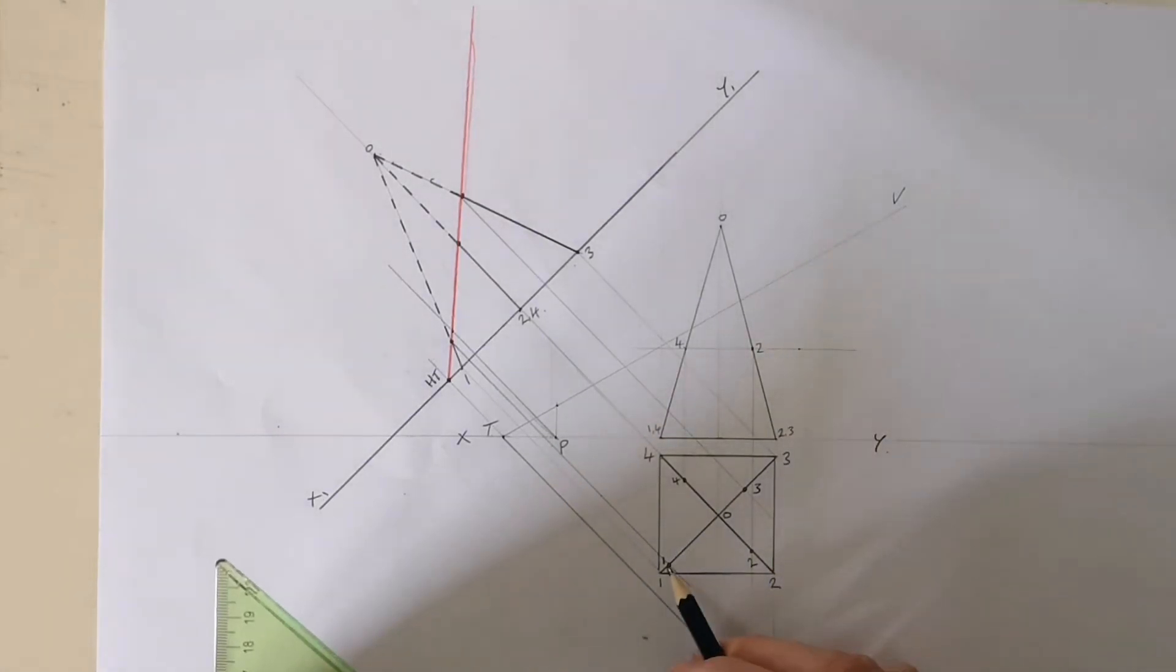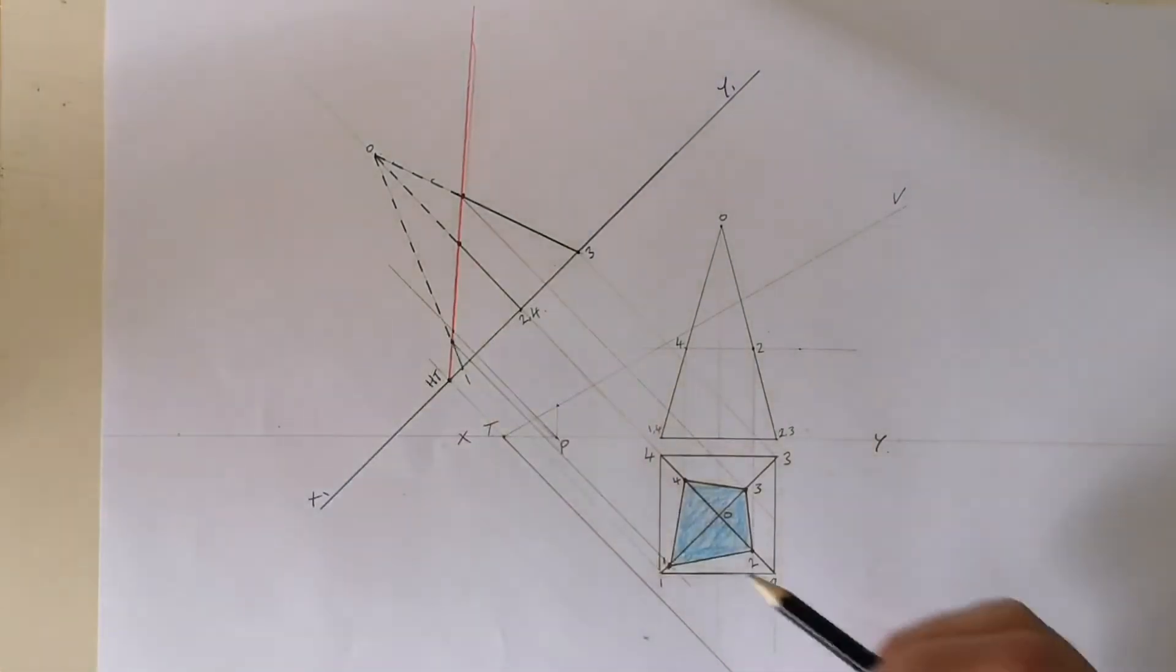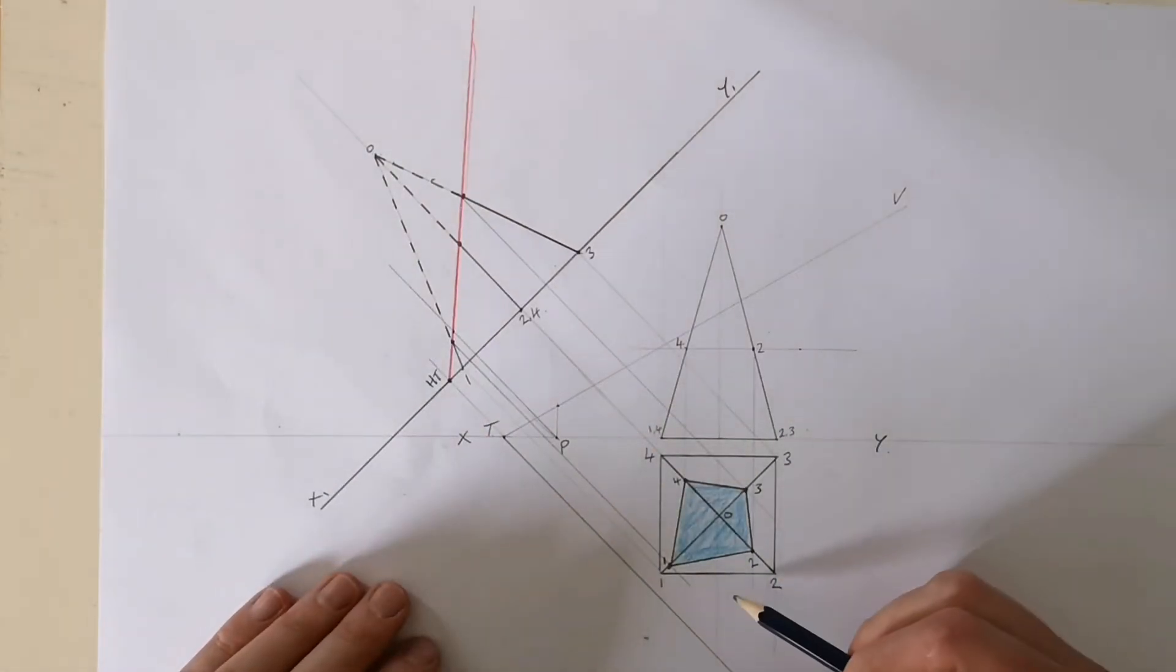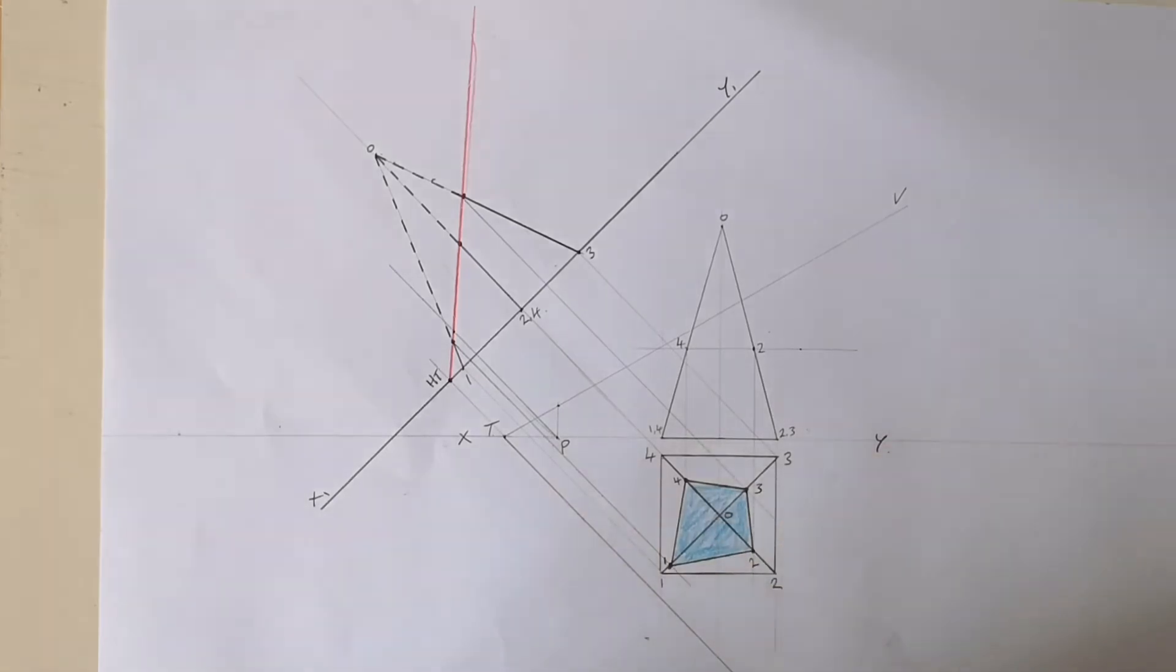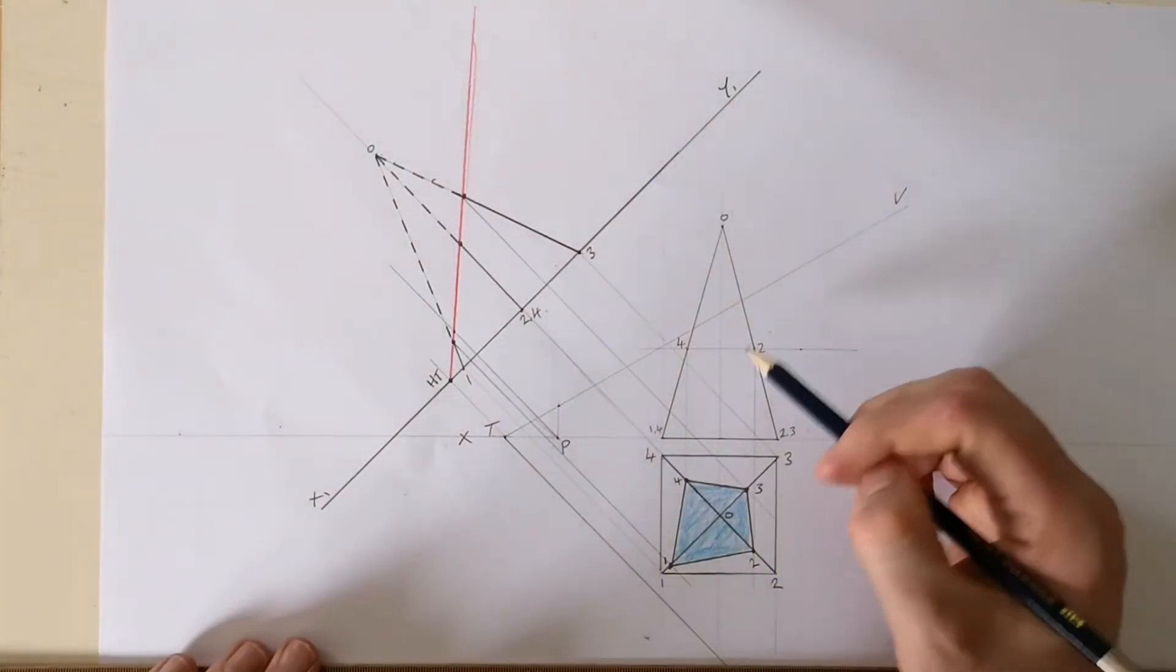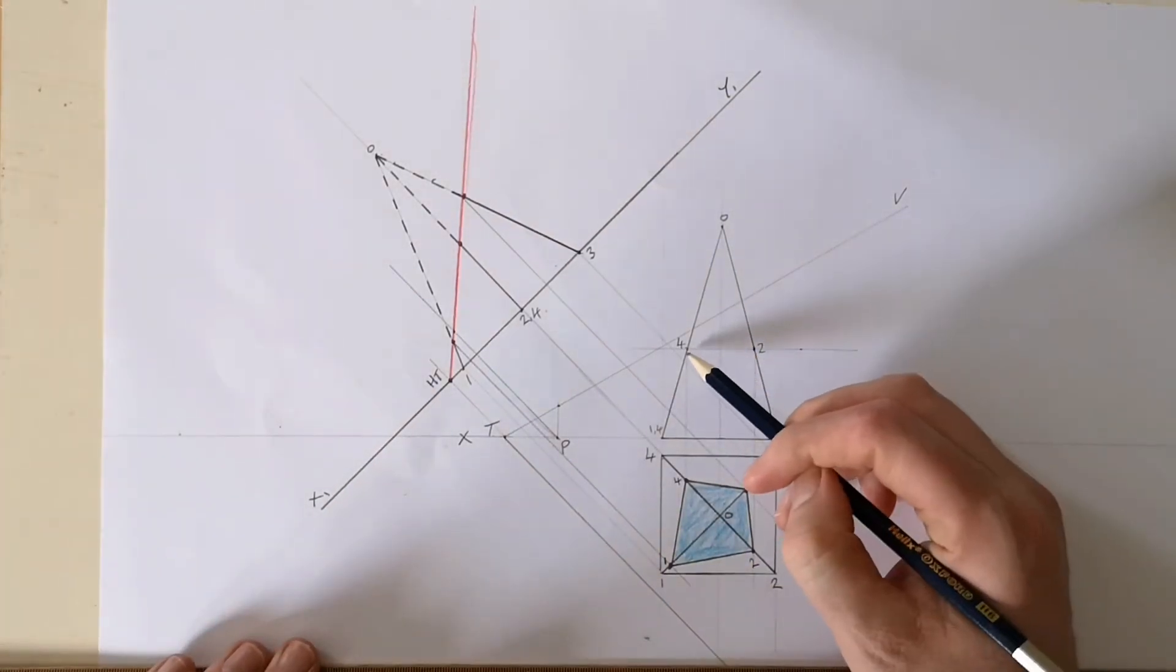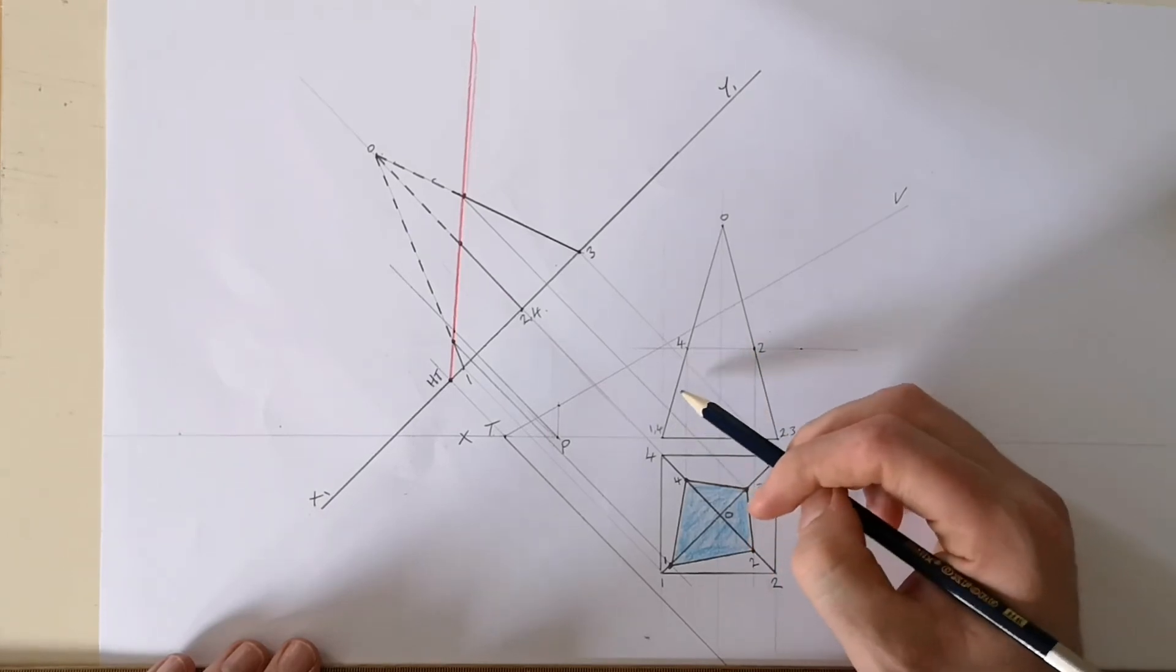So what I'm going to do now is I'm going to join these together: one, two, three, four. So you can see now in blue, I have the cut surface where it cuts through the pyramid. So now that's the plan. Obviously I want to put it into the elevation. I already have two and four in the elevation, so now I need to get points one and three.